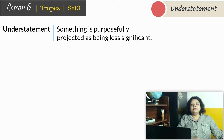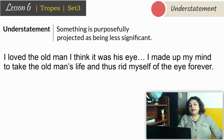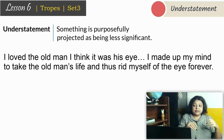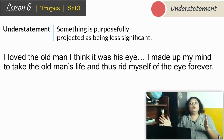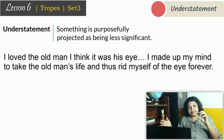Edgar Allan Poe was the mastermind of horror and gothic tales, and in The Tell-Tale Heart he has this line: 'I love the old man. I think it was his eye. I made up my mind to take the old man's life and thus rid myself of the eye forever.' In order to get rid of the eye, he decided to get rid of the man. But look at the casual tone here — today's lesson is all about figures of speech based on tone. This is a serious murder he is talking about, but he is talking in a very casual way. That is understatement.